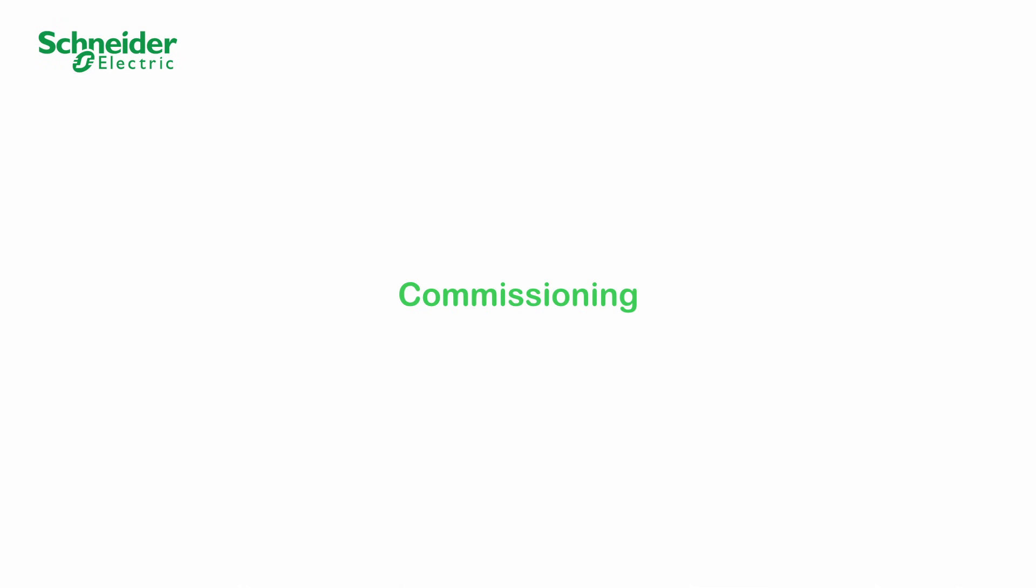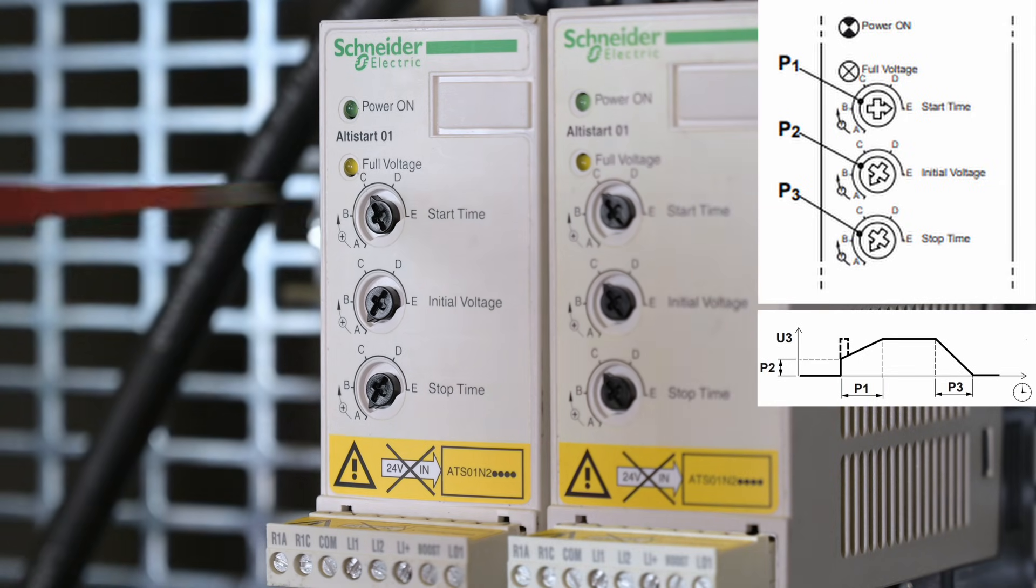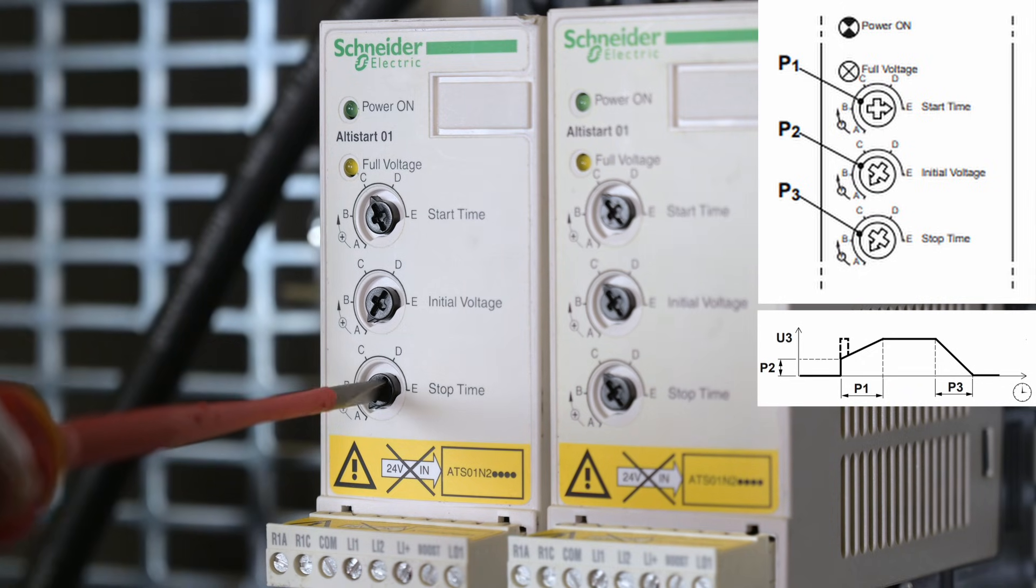Commissioning. Adjust product potentiometer setting according to the application needs, the start time, the stop time, and the initial voltage.